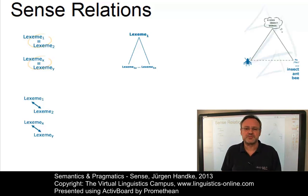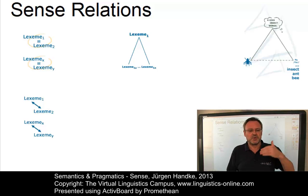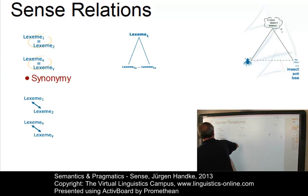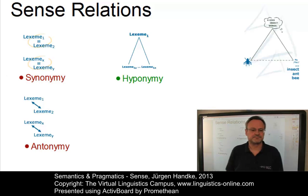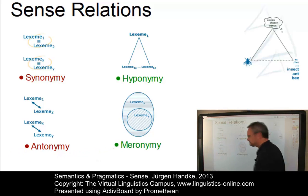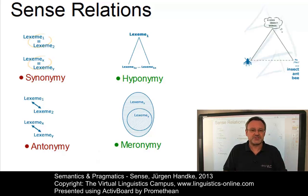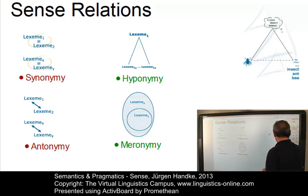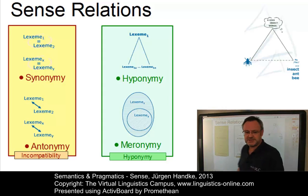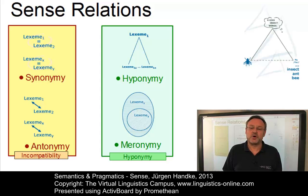There is disagreement among linguists about the number of sense relationships at the level of lexemes. The most common view defines three sense relations: synonymy, antonymy, and hyponymy. Some linguists include a fourth relationship, namely meronymy. While others prefer hyponymy as one relationship — which then includes meronymy — and incompatibility as a second sense relationship.